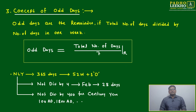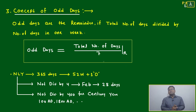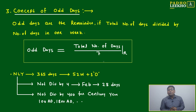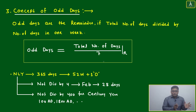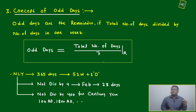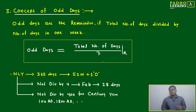What are odd days? Odd days is simple — take the total number of days and divide by seven. Why seven? Because there are seven days in one week. Whatever remainder you get, that is called odd days. Once you have the odd days, you can understand how many complete weeks there are.